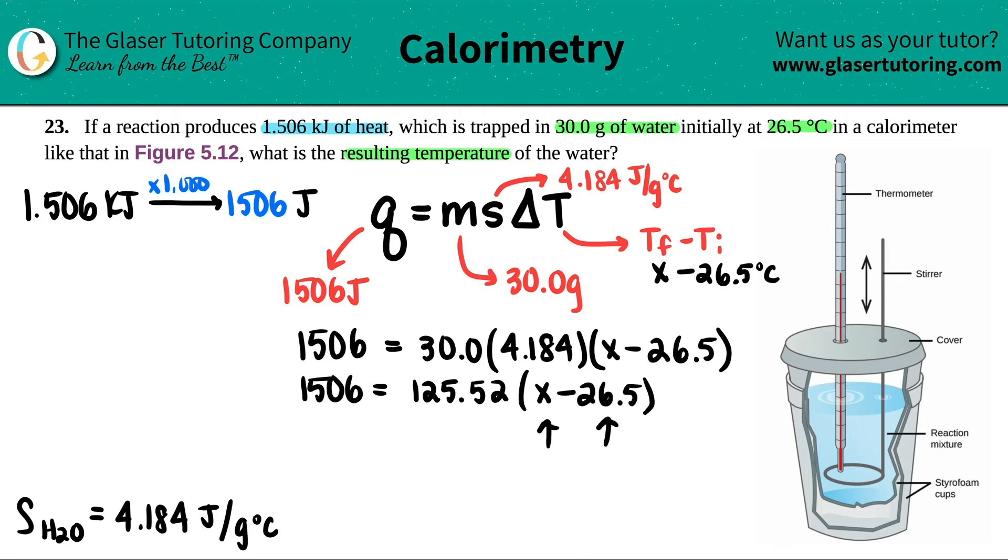Now I have two different things in parentheses, and then outside, I have this number multiplied by this parentheses. So this is distributing. You got to distribute. Fun times. So this is going to be 125.52 X and then minus whatever 125.52 times 26.5. So I'm going to have 3326.28.